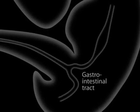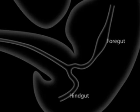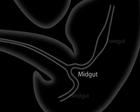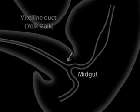This happens during the second month of intrauterine life. This is the gastrointestinal tract consisting of the foregut, the hindgut, and the midgut. The midgut is continuous with the vitelline duct or yolk stalk, which later becomes obliterated.